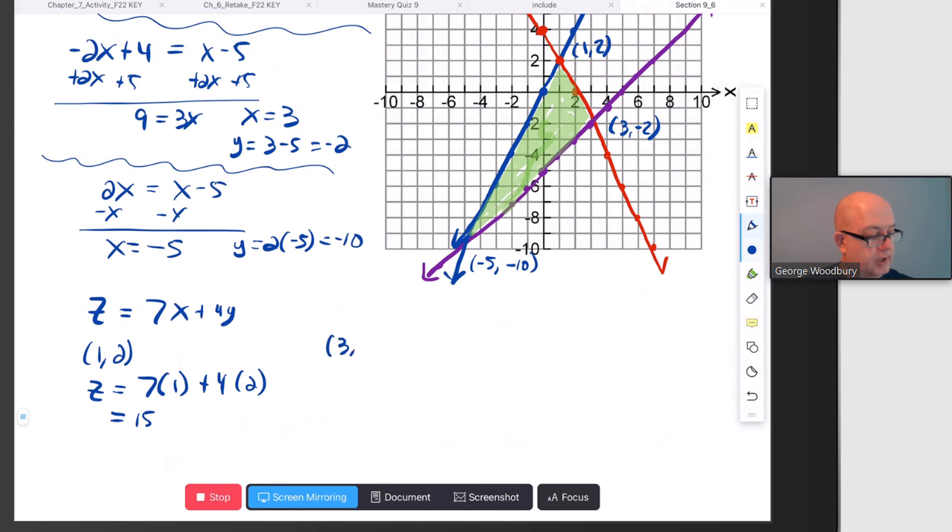The second point was at (3, -2). z = 7(3) + 4(-2) = 21 - 8 = 13. So far, 15 is the biggest. Finally, for (-5, -10), we can tell this one's not going to be the biggest because it's going to be negative. z = 7(-5) + 4(-10) = -35 - 40 = -75.